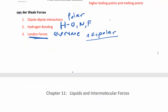Hydrogen bonding is a very particular type of dipole-dipole interaction. It occurs when you have a hydrogen that is directly attached to an oxygen, a nitrogen, or a fluorine. When you have that situation, you can have hydrogen bonding. We'll talk about each one of those in more depth.